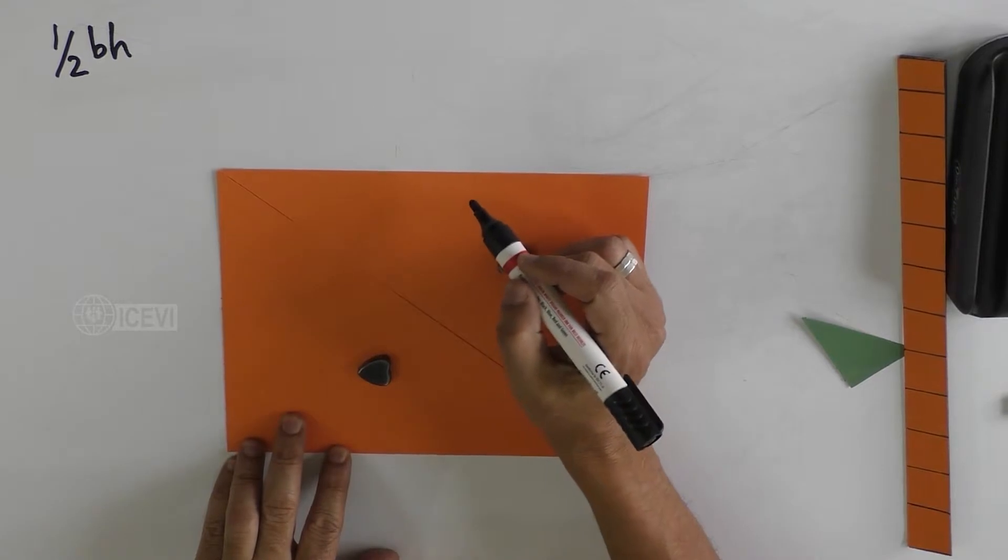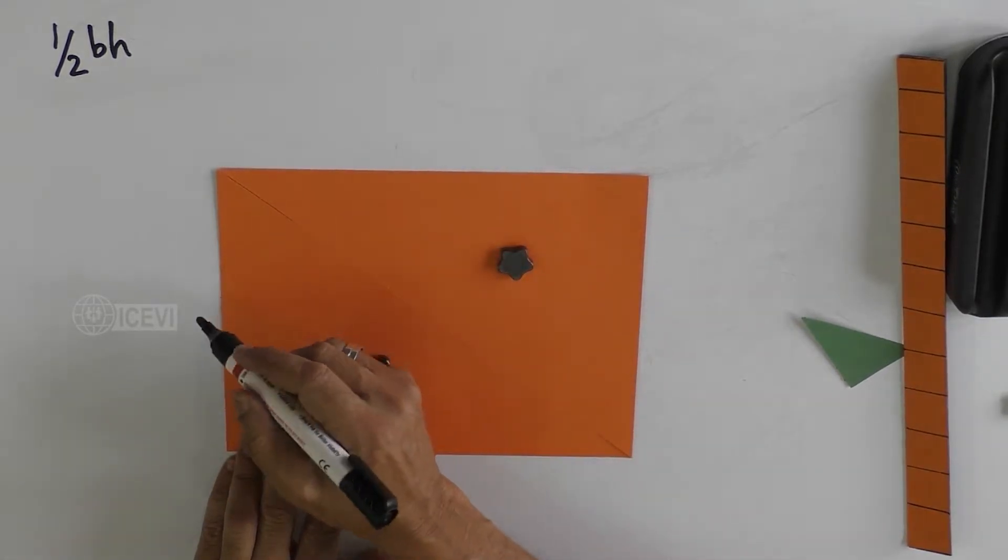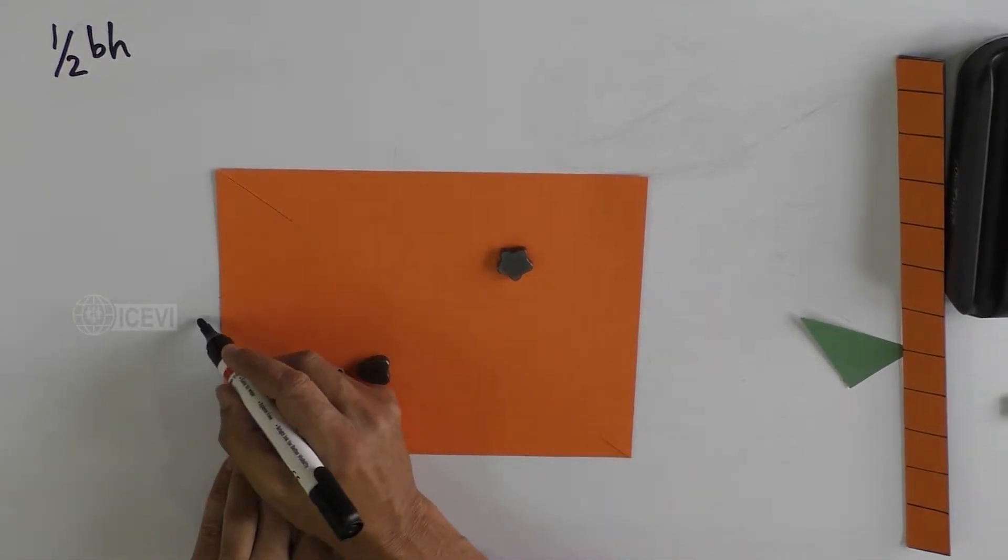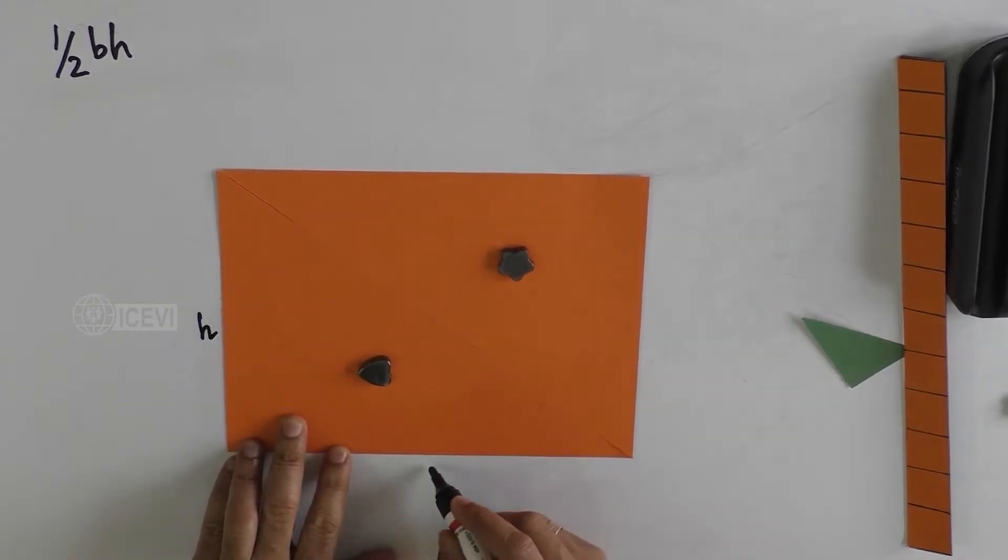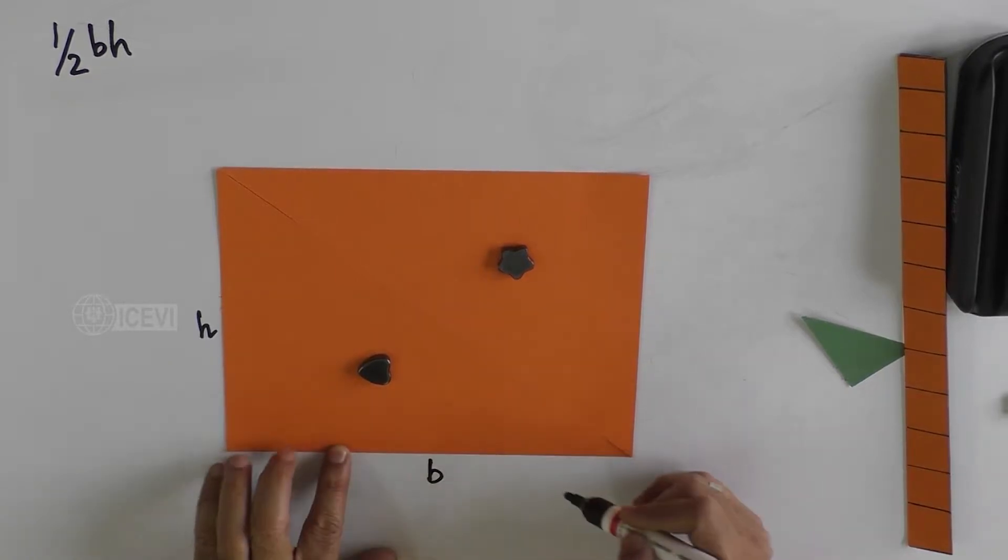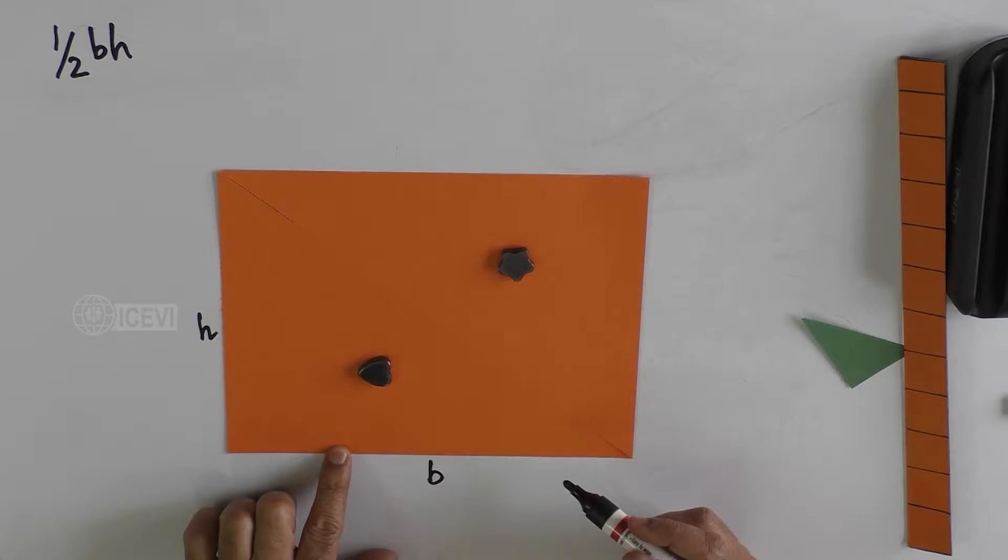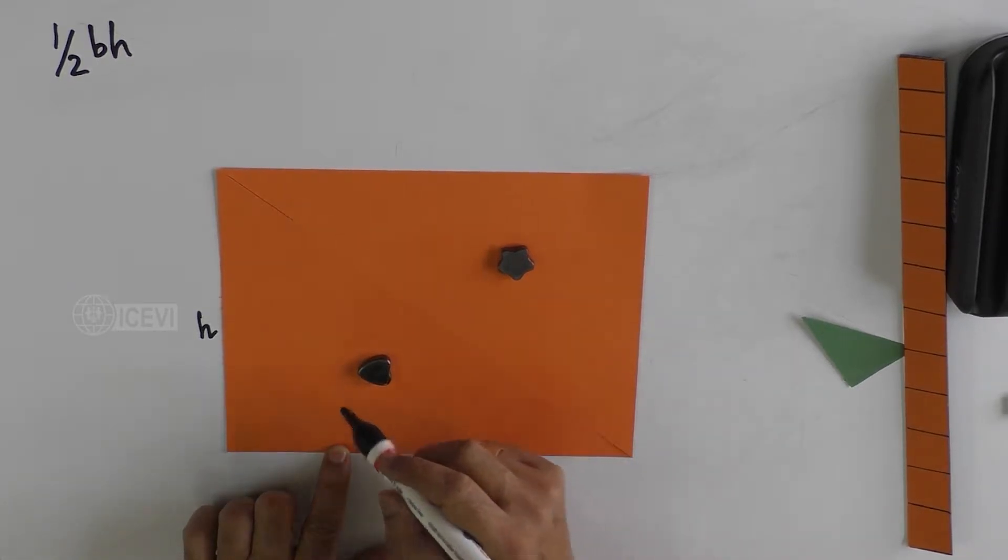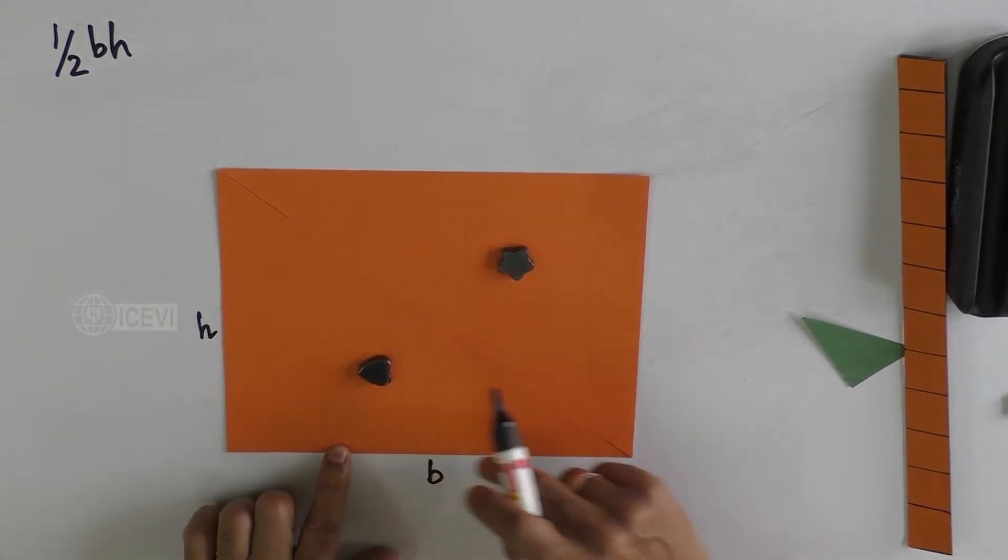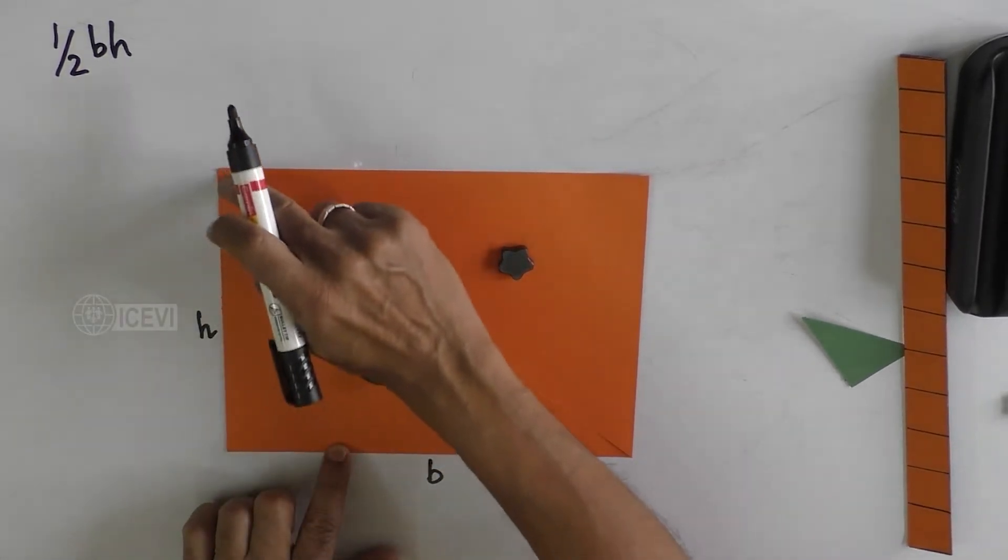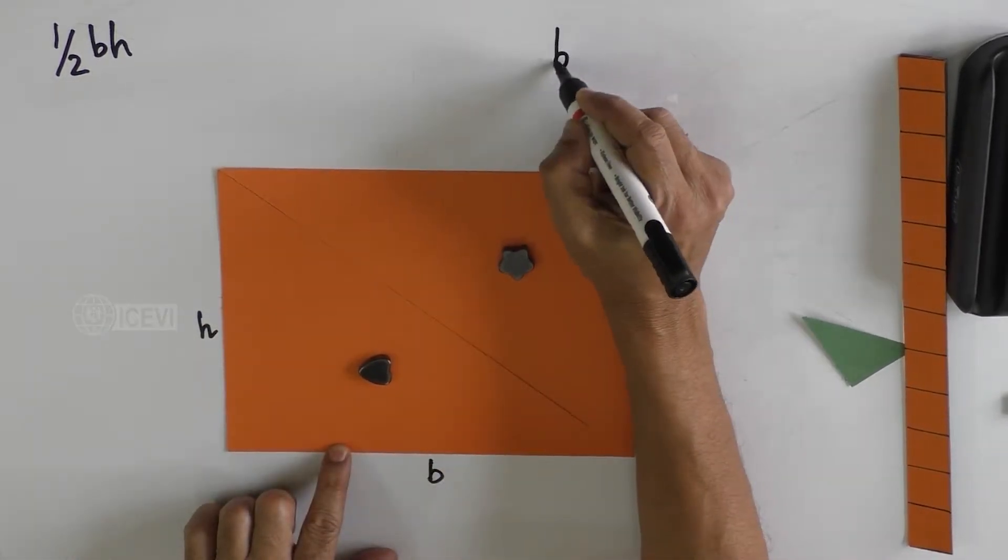If we assume that one side is H, the base is B, the length is B and the width is H. What is the area of the rectangle? We say the length multiplied by the width, that is B times H.